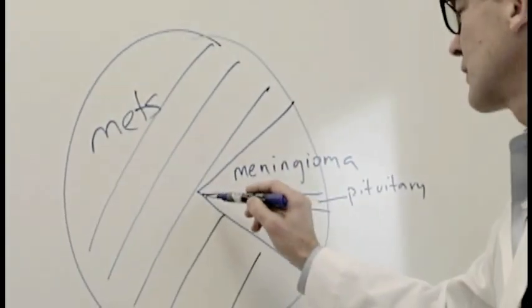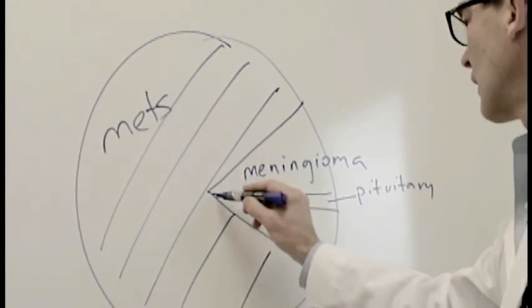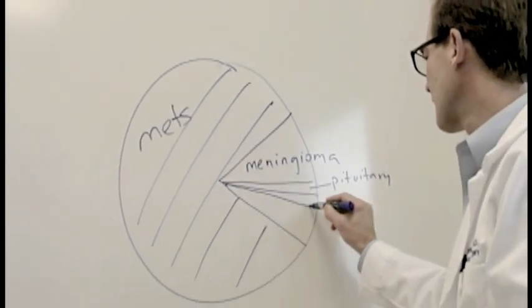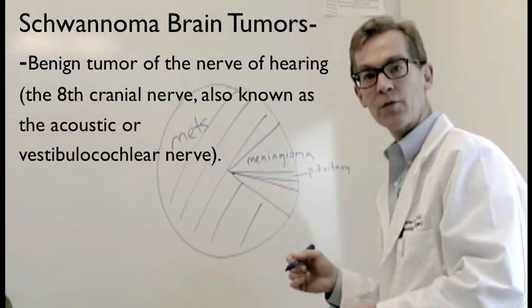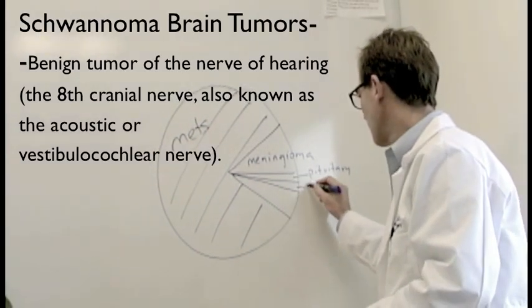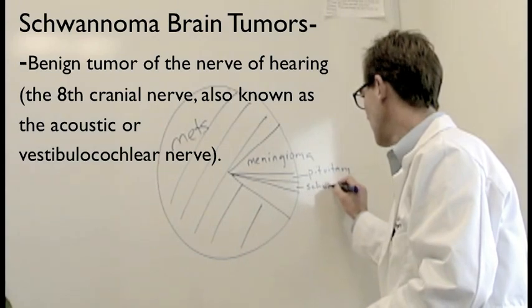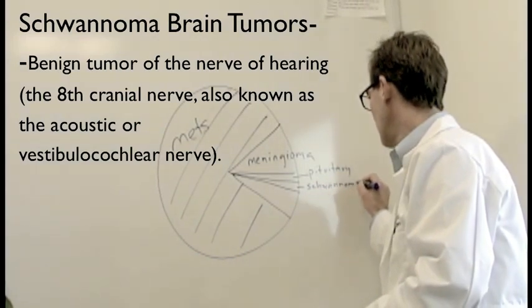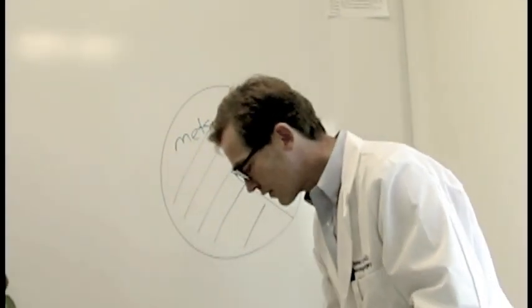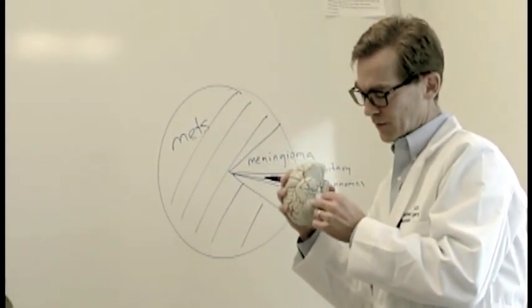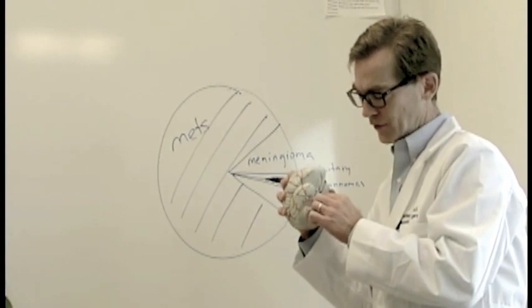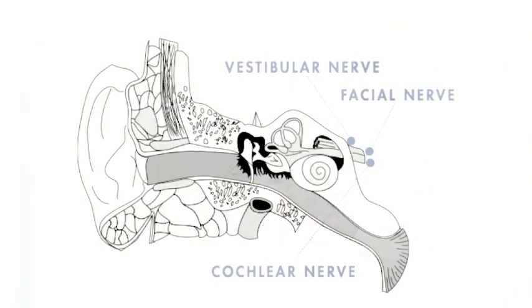Another significant portion of tumors can arise from the nerves that come out of the base of the brain, and these are called schwannomas. So what are schwannomas? These are tumors that arise when a nerve exits the brain. For instance, at the base of the brain there are a couple of nerves called the seventh and eighth nerves.